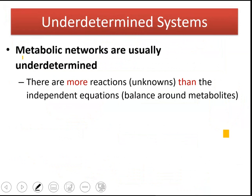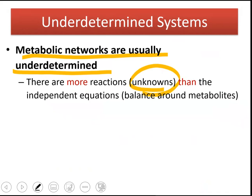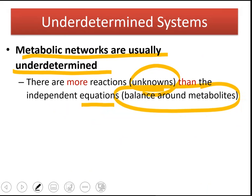As I briefly mentioned, metabolic networks are usually underdetermined. In metabolic networks, our unknowns are reaction rates — we want to predict reaction rates. Our equations are written around intracellular metabolites, representing balances around those metabolites. This means there are more reactions — more unknowns — in metabolic networks than the number of independent equations, which are the mass balances around intracellular metabolites within your system's boundary.